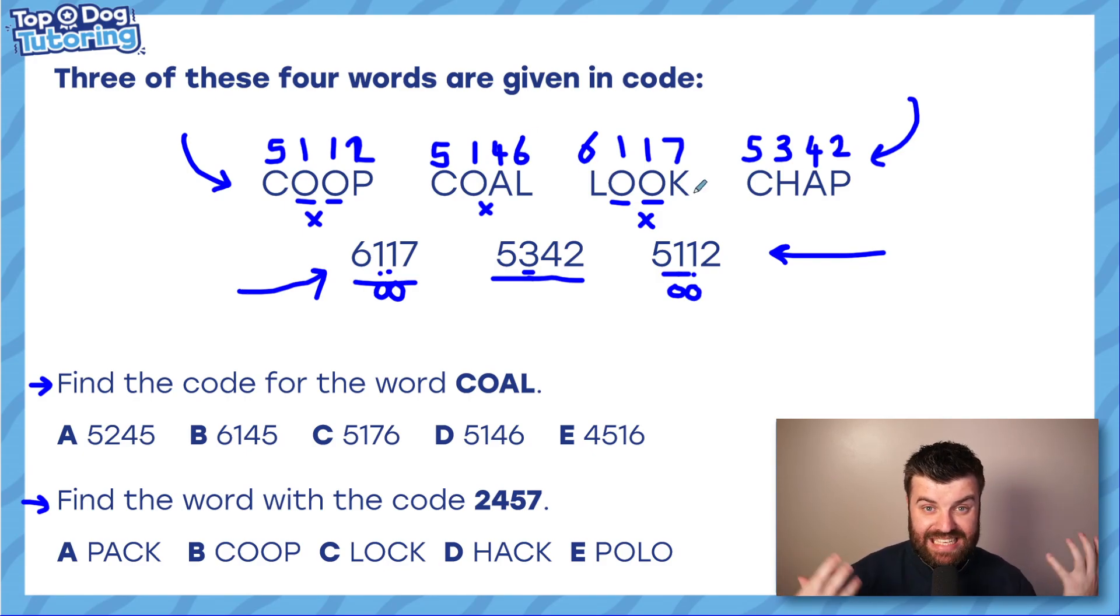Once you've cracked the code, that's actually the tricky part of the question. That's the hard bit. Just cracking the code at the top. Once we've cracked it now, these questions are really easy. Find the code for the word coal. We've just done it. We've just found it by definition, by cracking the code. It's five, one, four, six. So we don't have to do anything else now other than circle the answer. In the 11 plus, it's really important we do this. We're not going to waste more time trying to solve something when we've already done the legwork. Just put the answer and move on.